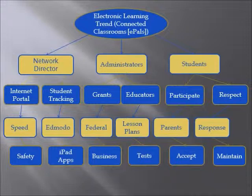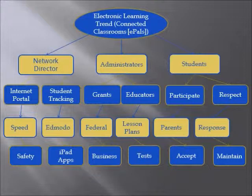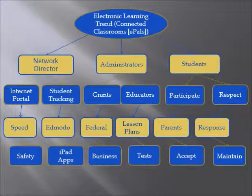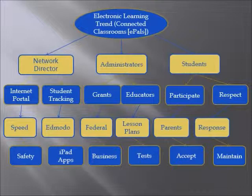My fifth slide incorporates all of the material that was in the first four slides with the same grayscale background theme. Underneath Speed, we have a blue box with a gold border and white lettering that says 'Safety.' The next one under Edmodo is 'iPad Apps,' also in a blue box with a gold border — it's there so that the network administrator can approve the apps that are put on the iPads that the schools give the students. Underneath Federal, there is 'Business' — business is another type of grant that schools can get and another source of funding after taxes.